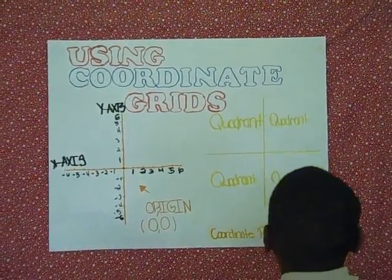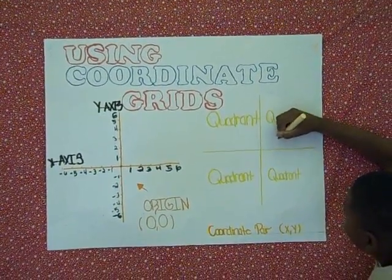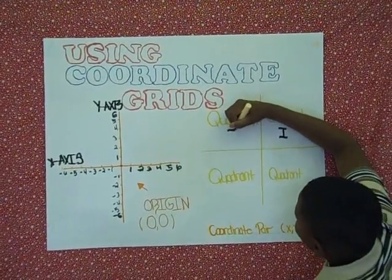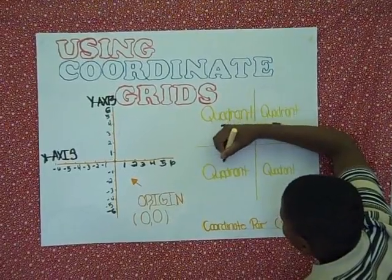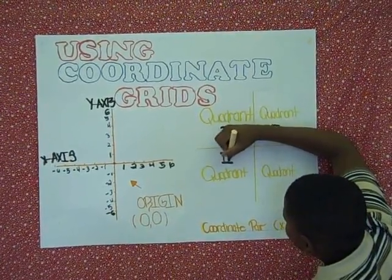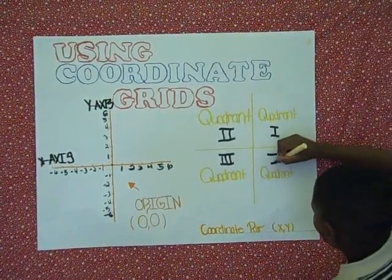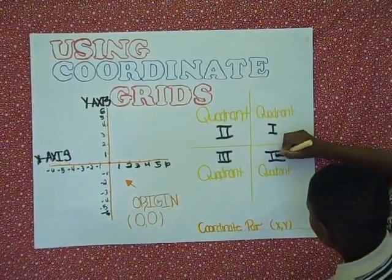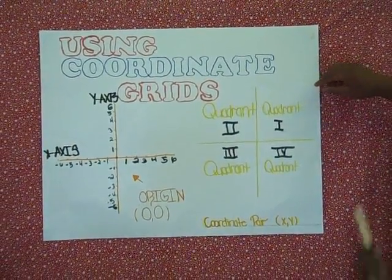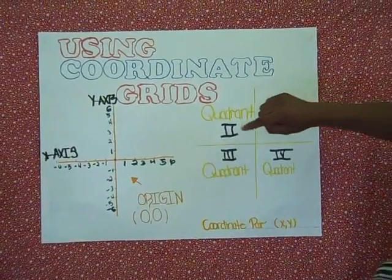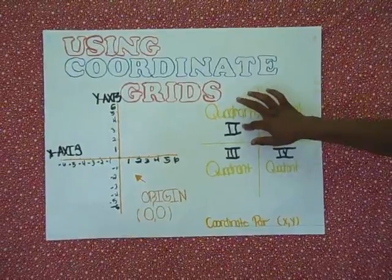I want to label the quadrants: quadrant 1, quadrant 2, quadrant 3, and quadrant 4. Also, when you label these quadrants, make sure you're going counterclockwise, not clockwise. So make sure this one stays on this side, not over here.